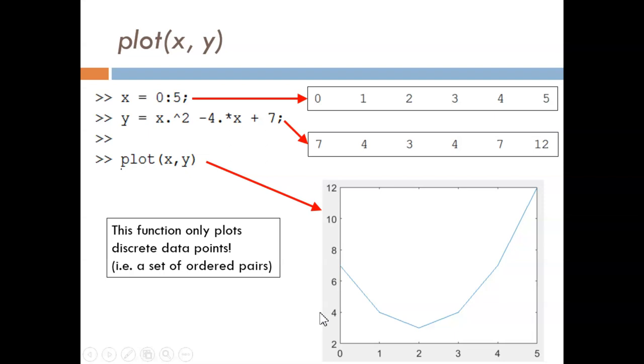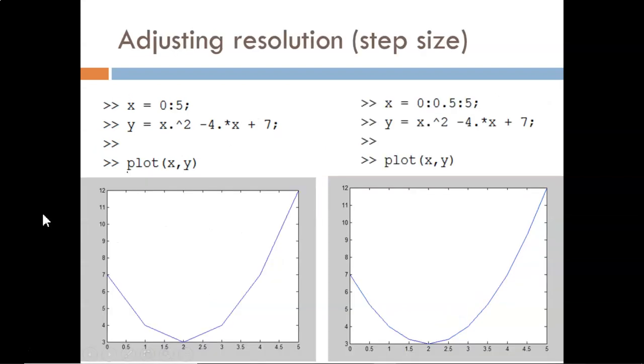If you need to make a plot, what do you do? You must start by getting two vectors of the same length. These vectors define the ordered pairs. What if we want a smoother curve? Then we need to get more ordered pairs by increasing the resolution or decreasing the step size in the x vector.